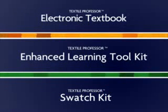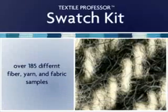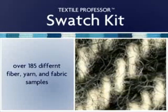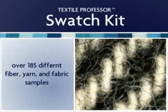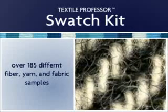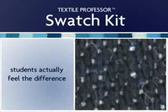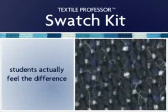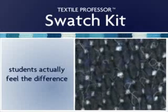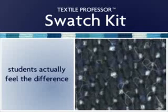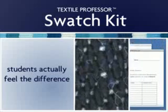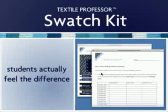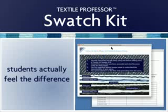The Textile Professor Swatch Kit, formerly the Textile Kit, features 185 different fiber, yarn, and fabric samples, many of them new to the kit. Students can feel them by hand, observe the texture, and take the samples apart as they read about each of them and compare them to magnified images in the electronic textbook. Several samples are also referenced in the study review questions and experiments included in the Enhanced Learning Tool Kit.